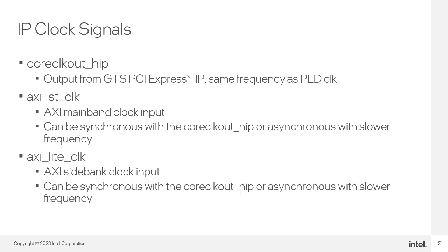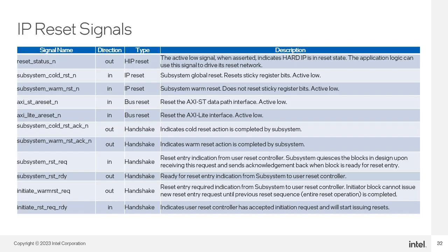Besides the pin reset discussed earlier, this slide lists the various reset signals that make up the IP. The first signal is a reset status signal — as long as the signal is low, then the IP is in reset, and the application may use this to drive its reset network. The next two are the IP reset inputs to drive the subsystem: one cold and one warm. Next are the reset inputs to the AXI interfaces. The remaining signals are basically the handshake signals between the IP and the reset sequence logic. So there are two reset domains for the IP: cold reset and warm reset.